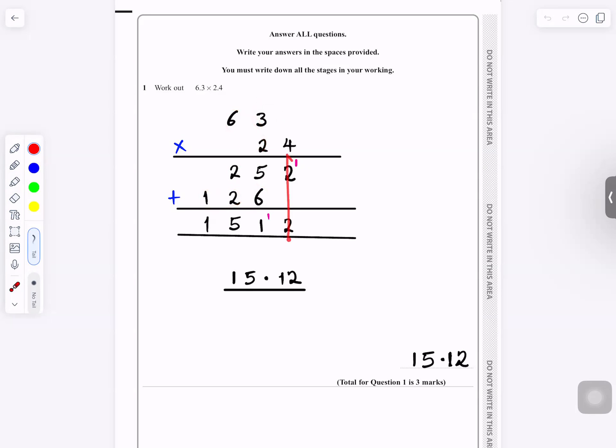You add them. 2 plus 0 is 2. 5 plus 6 is 11. 1 and carry 1. 2 plus 2 is 4 plus 1, you carry 5. And then 1 plus 0 is 1. So it's 15.12.